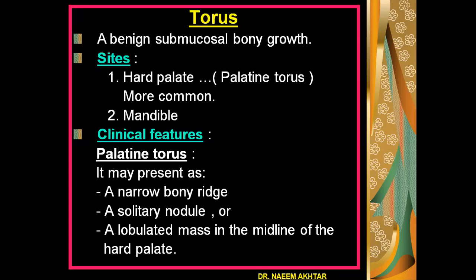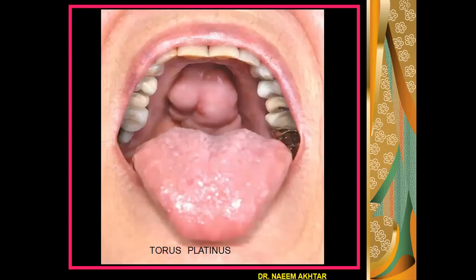Torus is a benign submucosal bone growth. The usual sites for torus formation are: number one, the hard palate — in this case the term is known as torus palatinus, which is more common compared to the mandibular torus. Clinically, torus palatinus may present as a narrow bony ridge in the oral cavity on the hard palate, or it may appear as a solitary nodule, or sometimes a lobulated mass in the midline of the hard palate. This photograph shows torus palatinus — a hard lobulated mass present in the hard palate area.